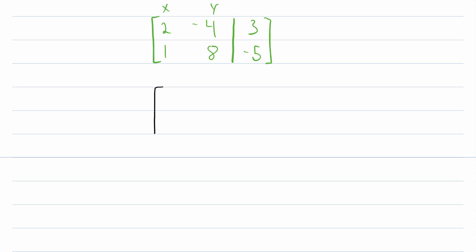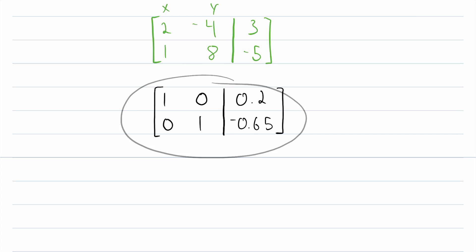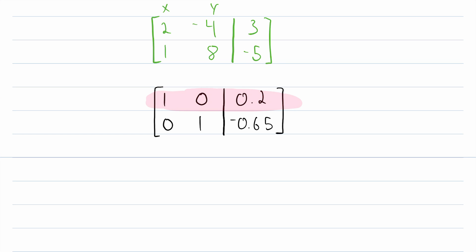We'll go over how to do that in another lesson, but just to show you what the result would look like: by manipulating this one matrix that represents the system of linear equations, we would get a reduced matrix where the first row tells us that 1 times x plus 0 times y is equal to 0.2 — which just means x equals 0.2. Similarly, the second row tells us y equals negative 0.65, and that is the solution to the system.